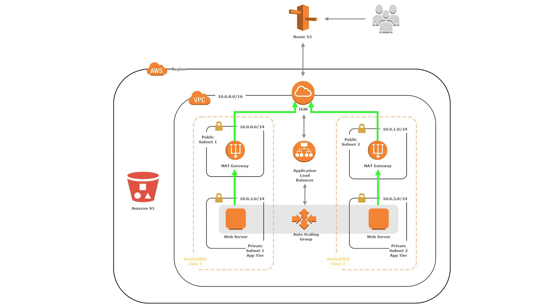So if one of these availability zones was to go down, the other instance in the second availability zone would still have access to the internet. Let's see how we can do that in the management console.